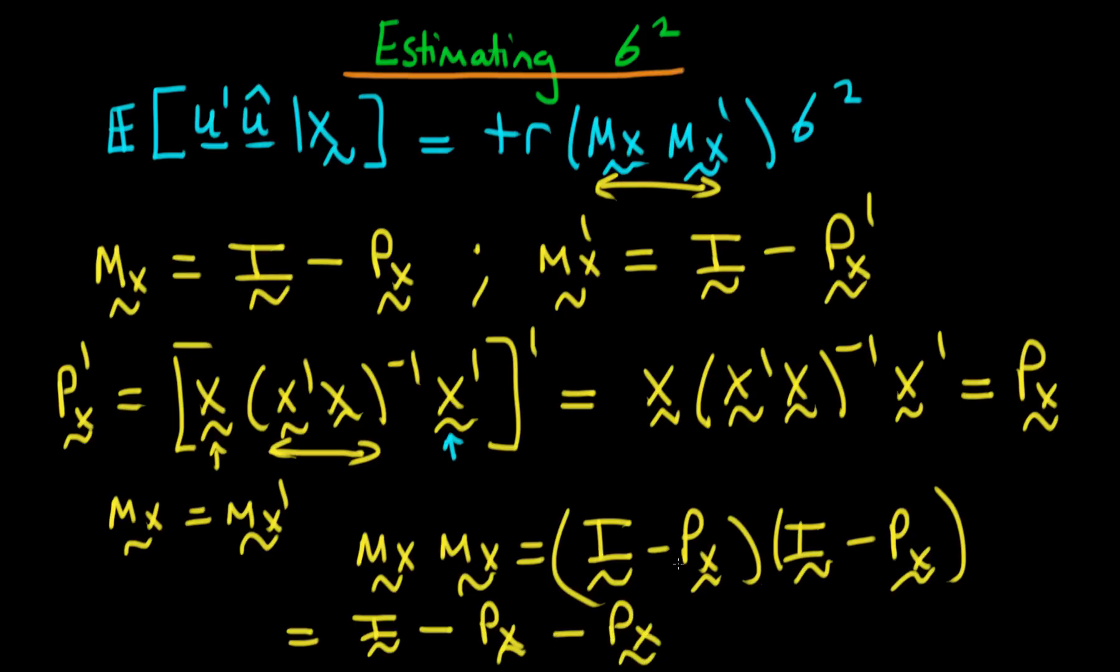So we get that. And finally we get a plus px times px but because we know that px is idempotent that means we're just going to get plus px.